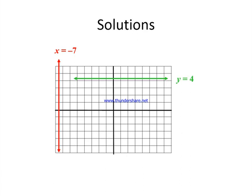In general, y equals k is the equation of a straight line which is parallel to the x-axis, and x equals k is the equation of a straight line which is parallel to the y-axis.